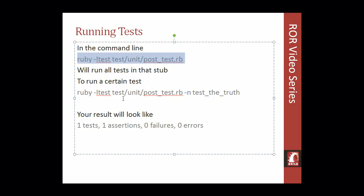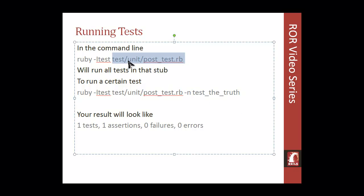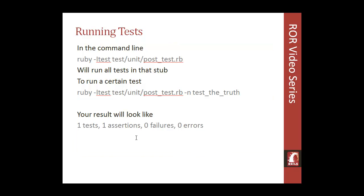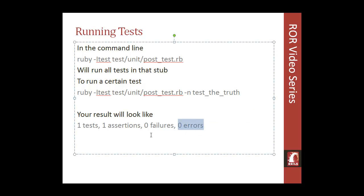When running tests, you run them from the command line — for example, a command to run the post unit tests for the model. You can also run a specific test by putting its name at the end, or run all tests in a given file. Your results will show pass/fail counts. If a test fails it'll report the number of failures, and if there's a syntax error you'll get an error message — but getting an error doesn't mean the test itself is failing; it's usually just a syntax issue.